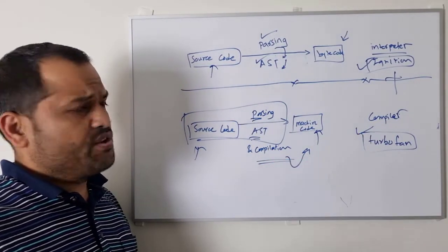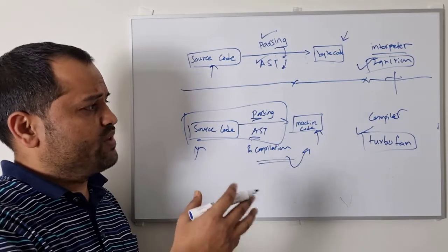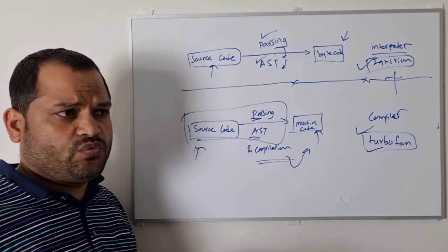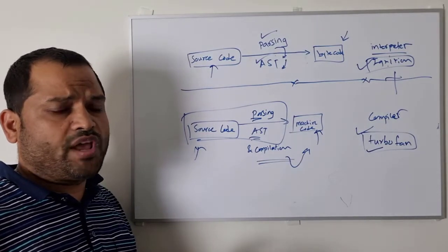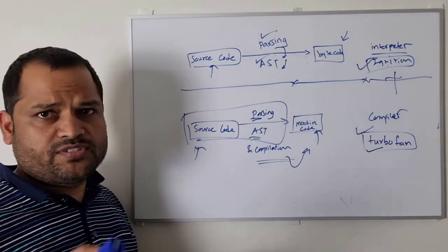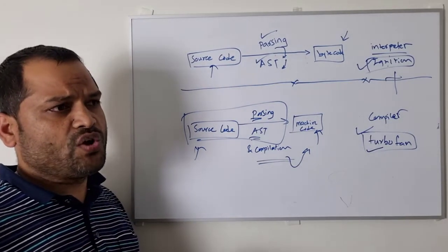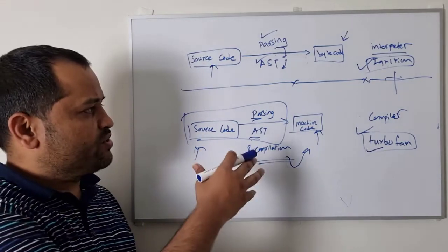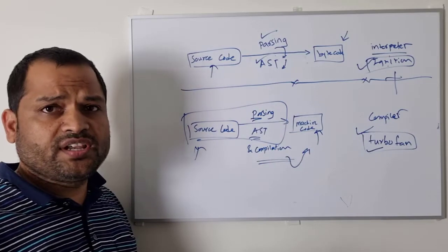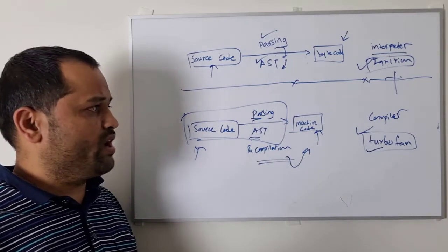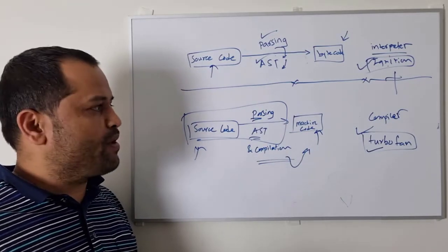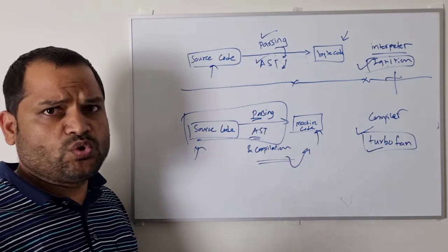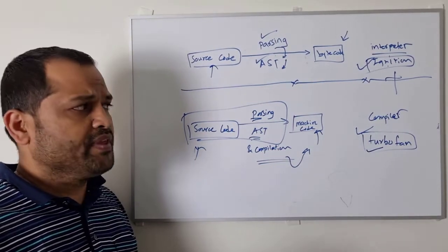Now you might ask why they use a combination of interpreter and compilation — there are pros and cons. The interpreter is very useful in cases where the JavaScript execution is not happening quite frequently. If some JavaScript is executed only occasionally, it doesn't make sense to compile that source code, because the compilation process — converting it into machine code and doing the optimization — is an expensive operation. You need processing power and memory to do that, and that's why the interpreter is useful in those situations.